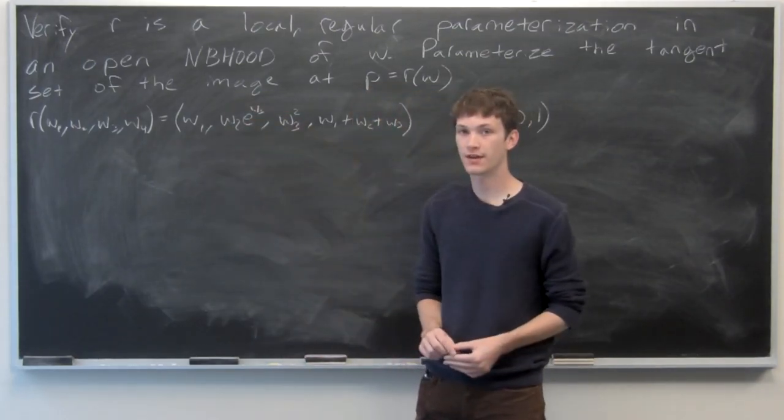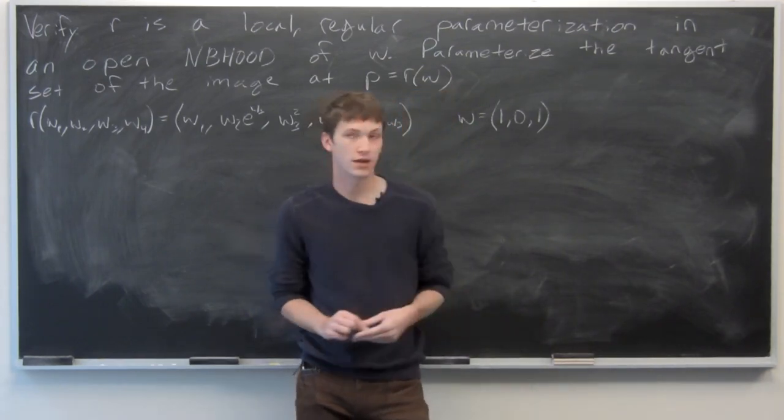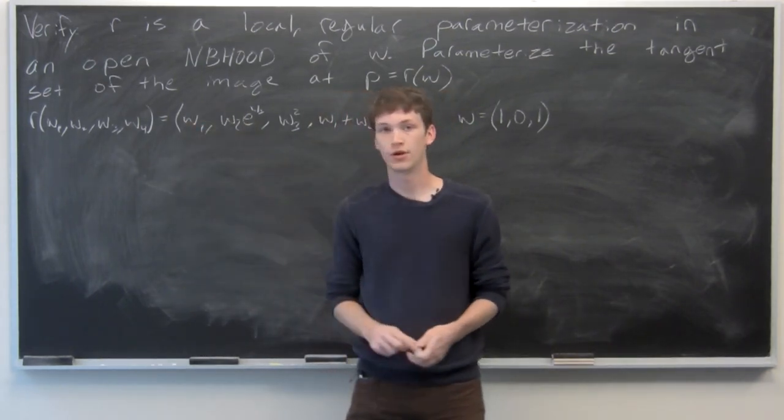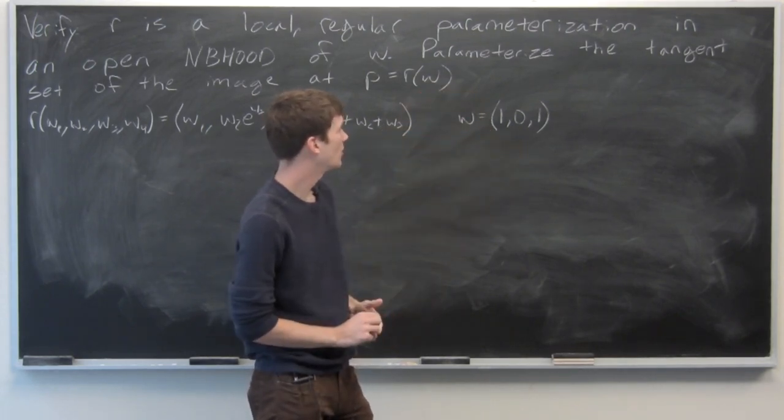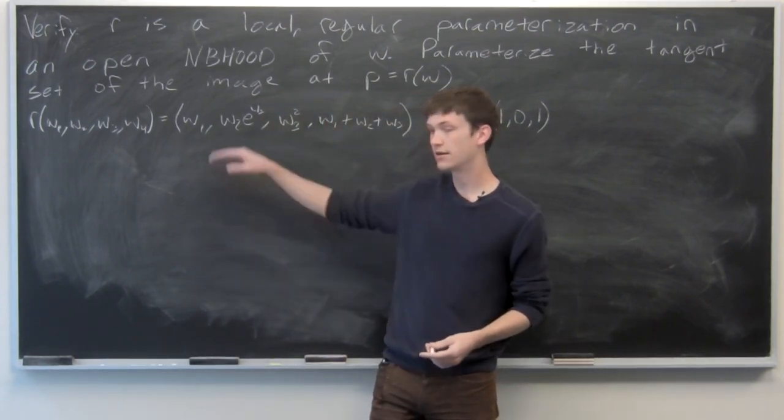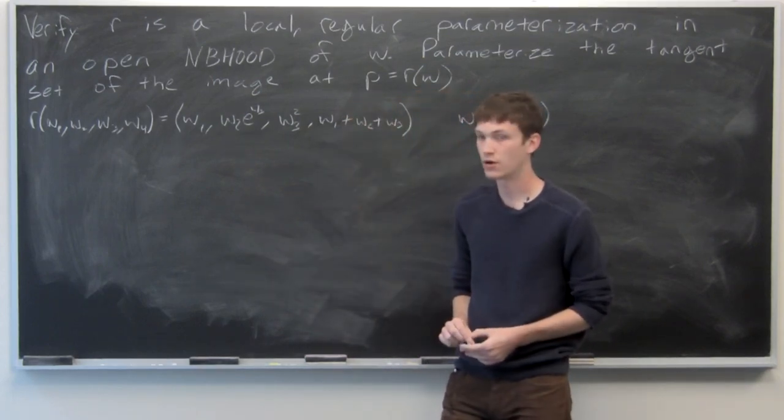In this problem, we're asked to verify that r is a local irregular parameterization in an open neighborhood of w, where w is 1, 0, 1, and we want to parameterize the tangent set of the image at p equals r of w.